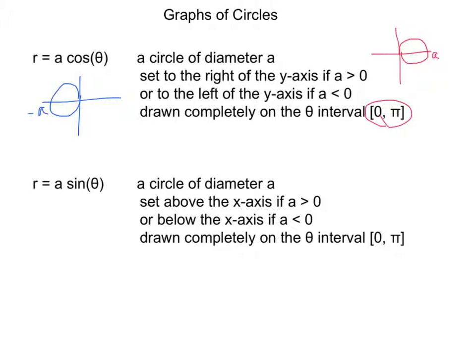If a is less than 0, if a is negative, we'll have a circle that sits below the x-axis with the same deal. A is the diameter, or this would go all the way down to negative a. As before, this graph is drawn completely on the interval between 0 and pi.